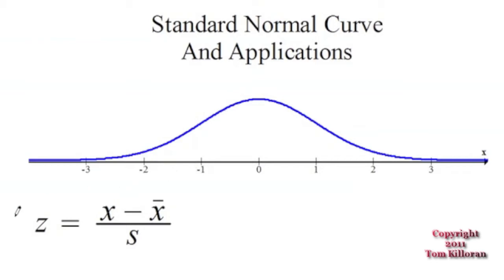To do that we're going to use this formula here, called a z-score formula. We get z equals a data point, some value x that you're given, minus the mean x-bar, divided by the standard deviation s.